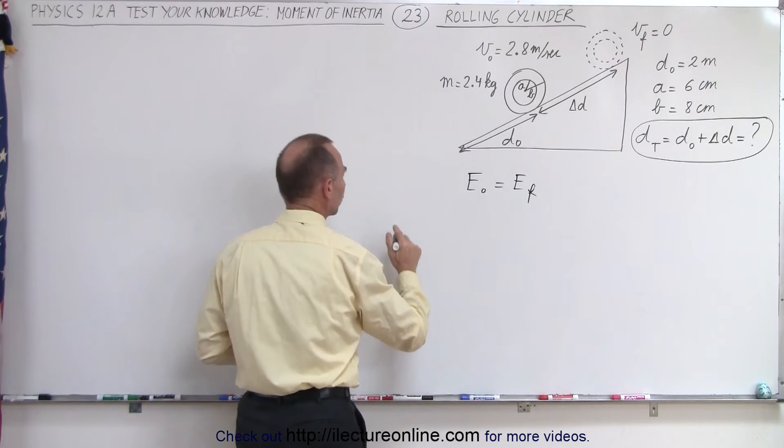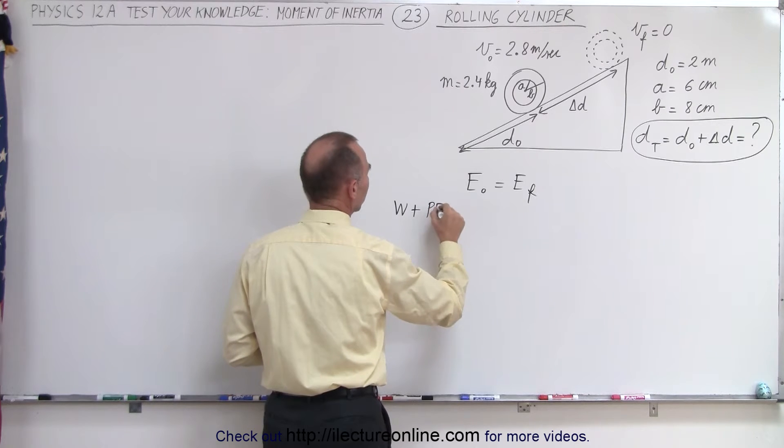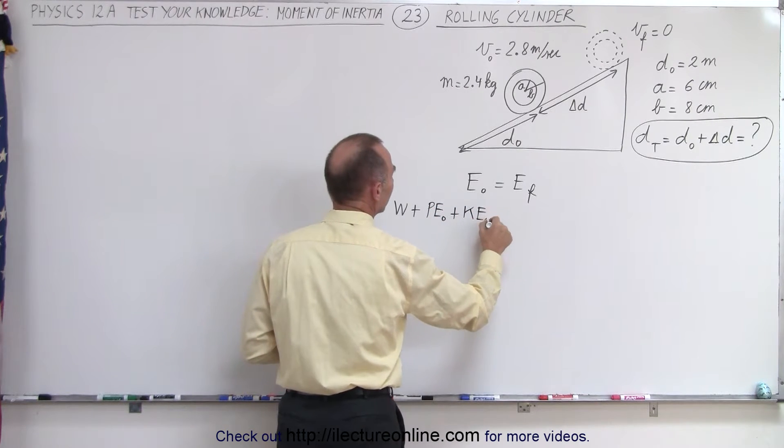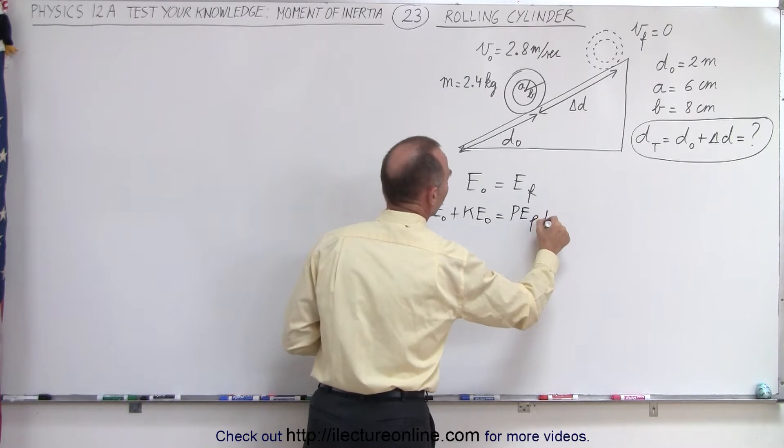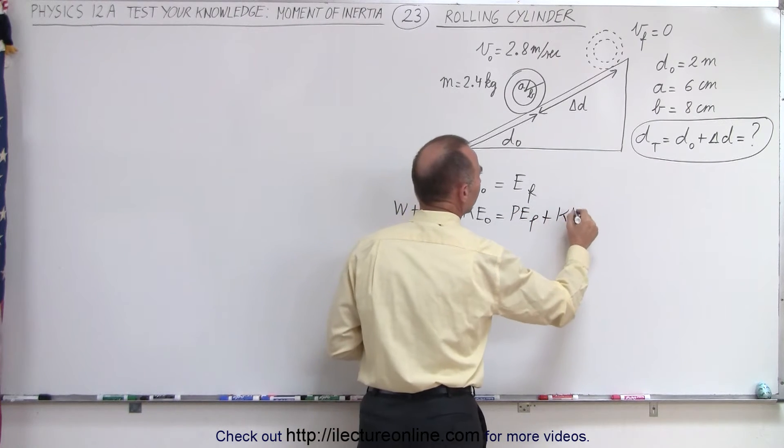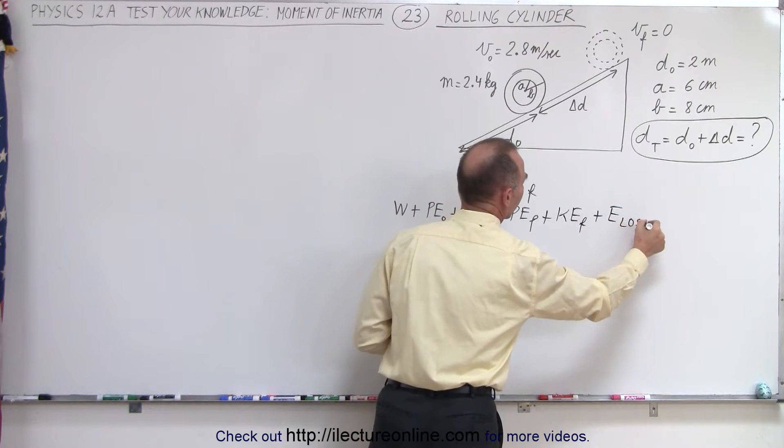And the total equation always looks like this. It's work put into the system plus the initial potential energy plus the initial kinetic energy is equal to the potential energy final plus the kinetic energy final plus any energy lost due to friction and so forth.